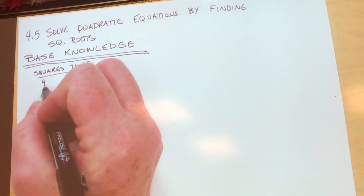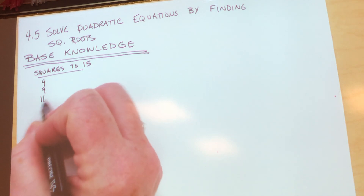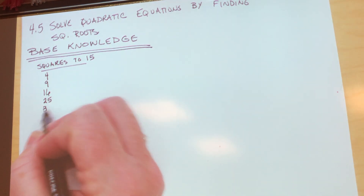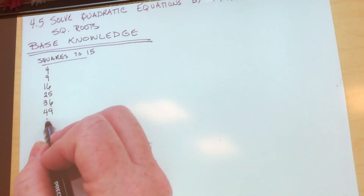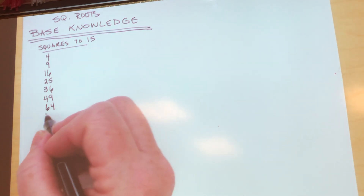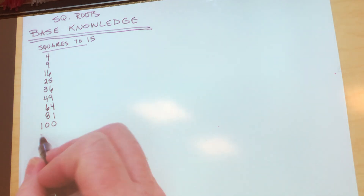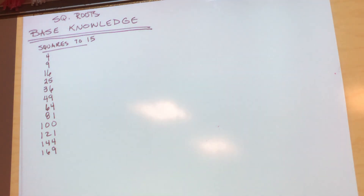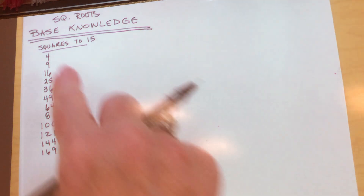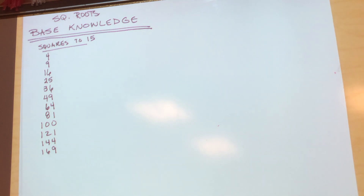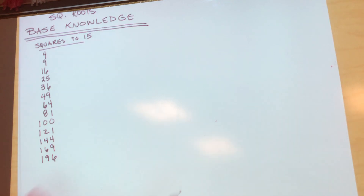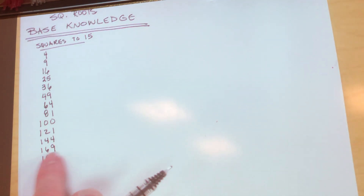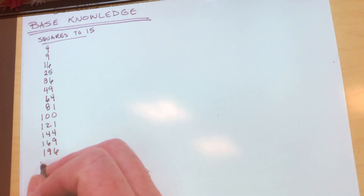What is 2 squared? 4. 3 squared? 9. 4 squared? 16. And continuing up through the squares: 5 squared is 25, 6 squared is 36, 7 squared is 49, 8 squared is 64, 9 squared is 81, 10 squared is 100... up to 13 squared. Everyone gets to 169 fine, but 13 squared — someone always yells the wrong answer. It is 169. Notice: you flip the last two digits of 13 squared to get 196 for 14 squared. And 15 squared is 225.